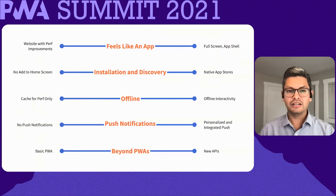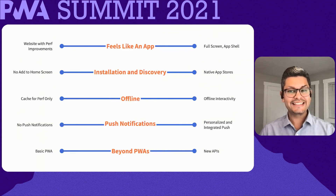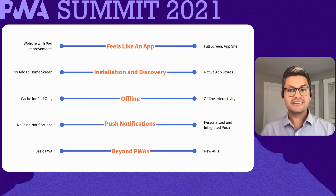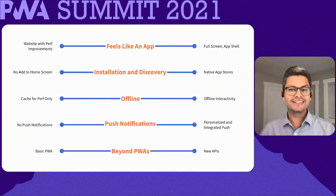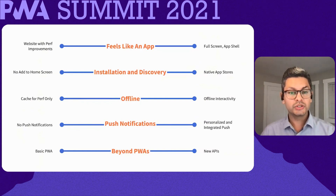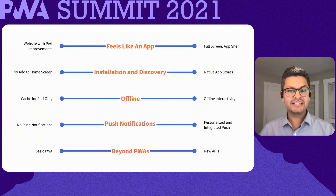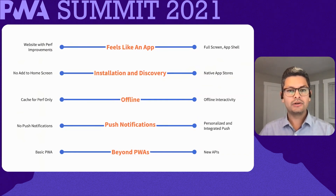The five factors are: how much does it feel like an app? What are you going to do for installation and discovery? What will you use offline functionality for? Will you have push notifications, and if so, how personalized will they be? And what features will you include that are technically not part of the definition of a PWA, but that people often include when building a PWA? Let's look at each of these factors more closely and then talk about how we use them to build a roadmap for our app.